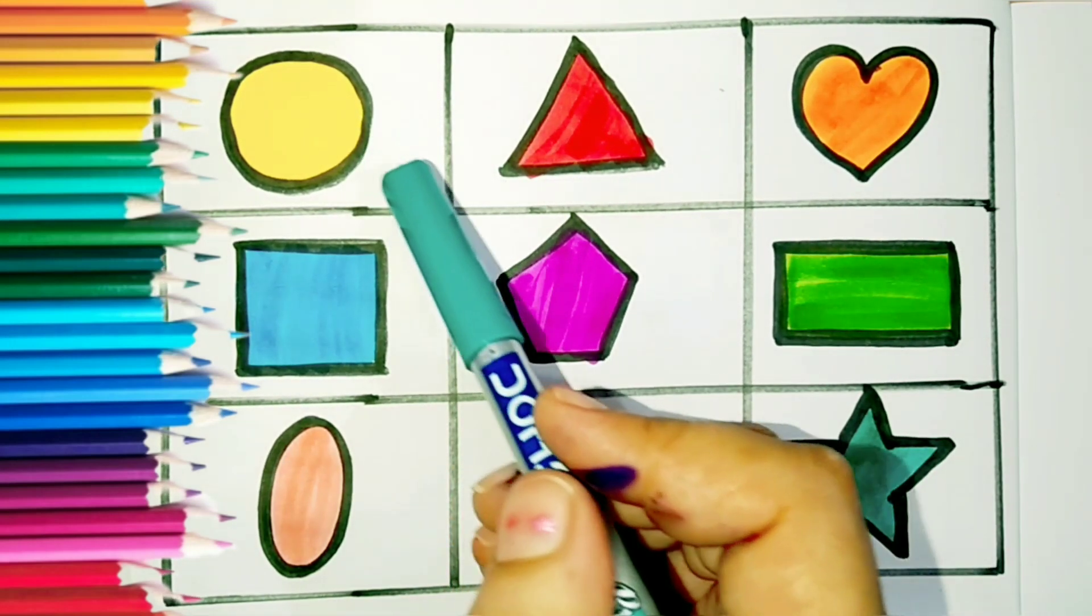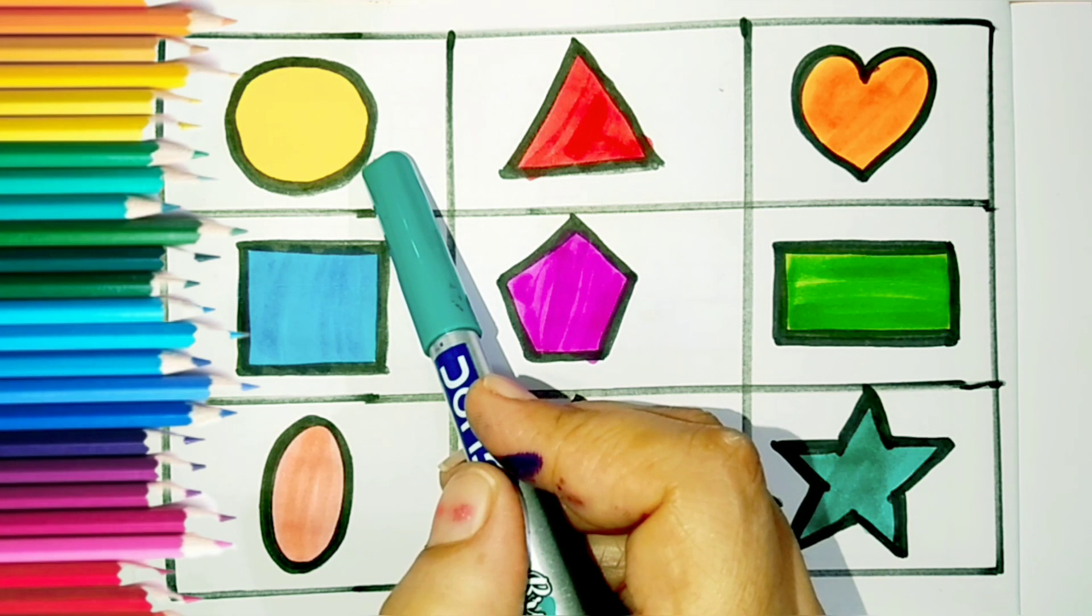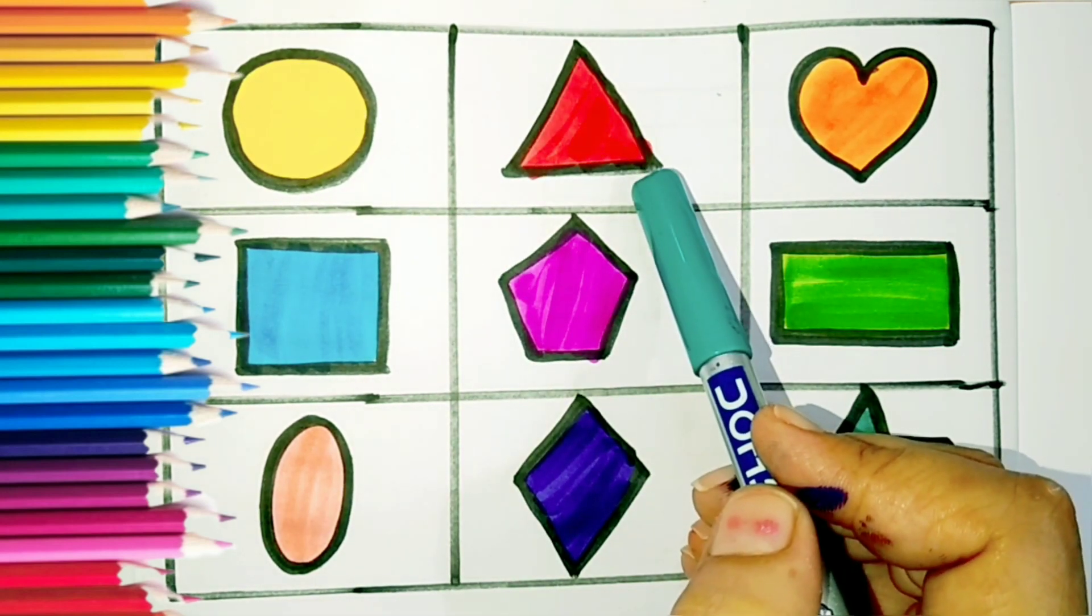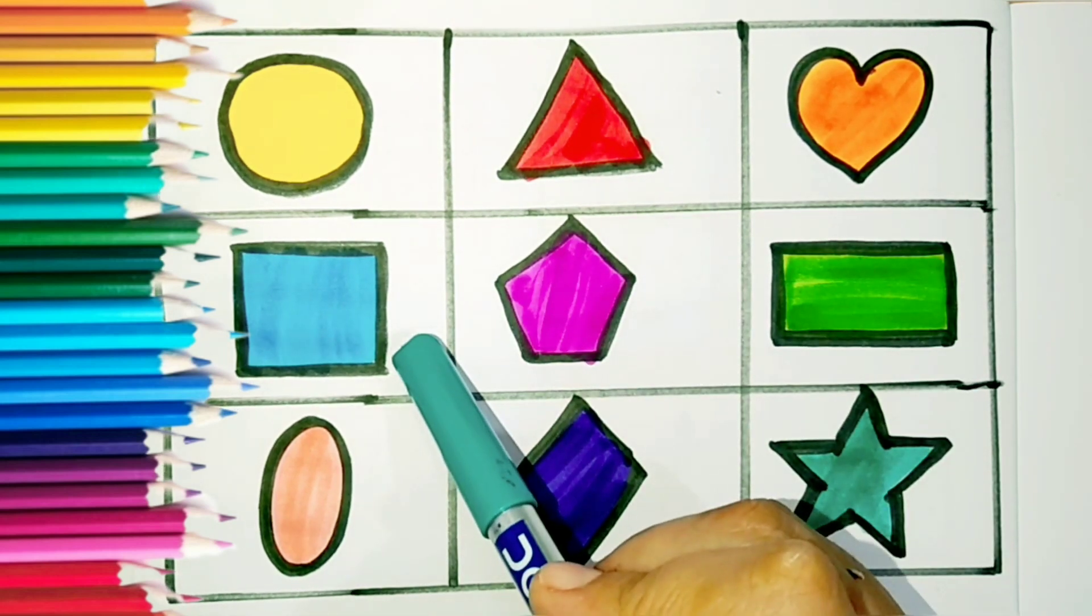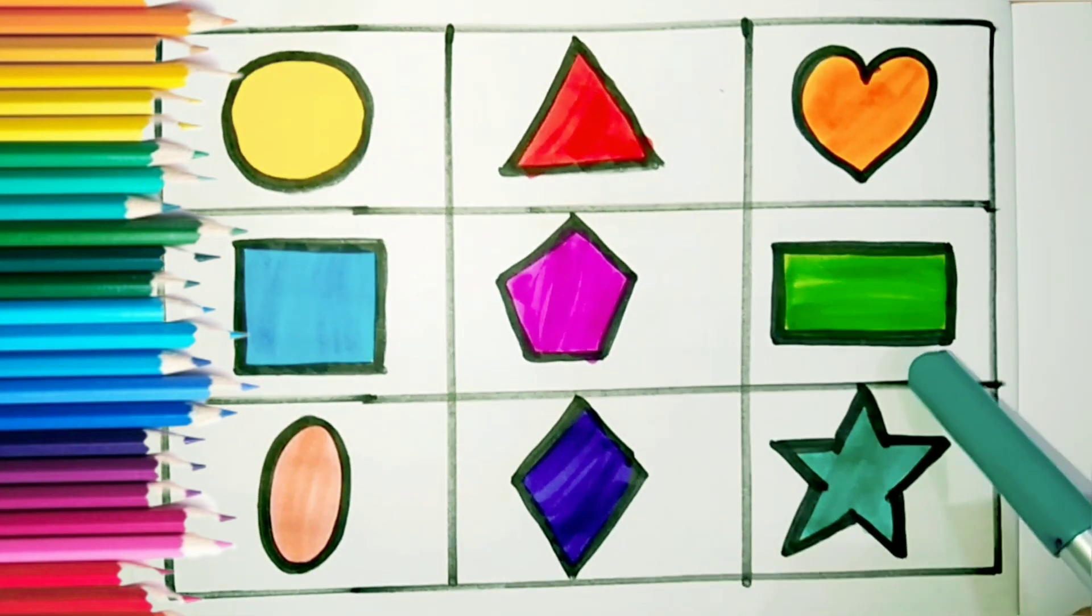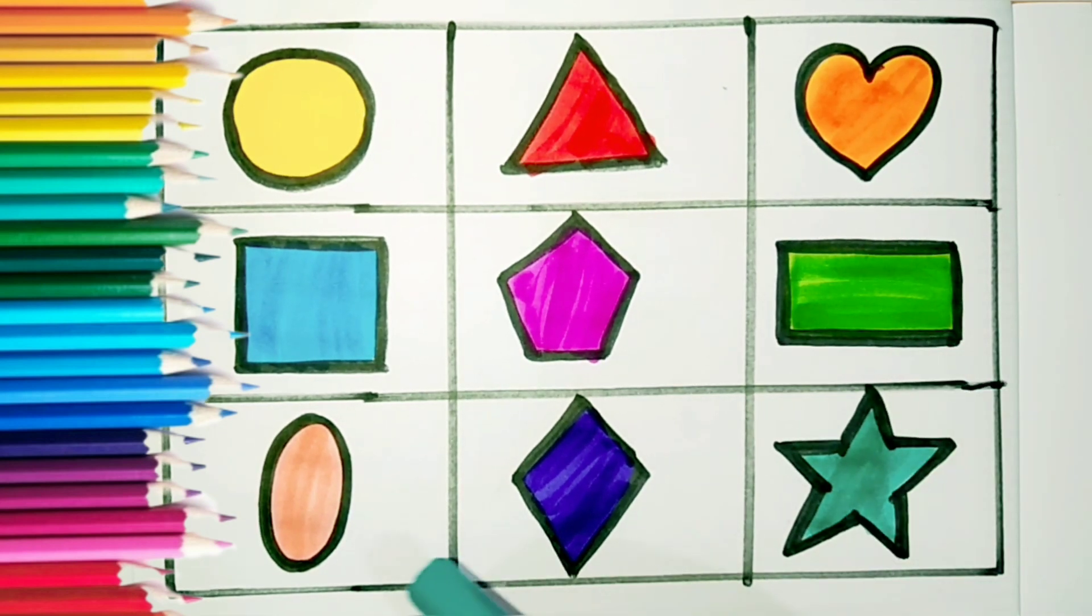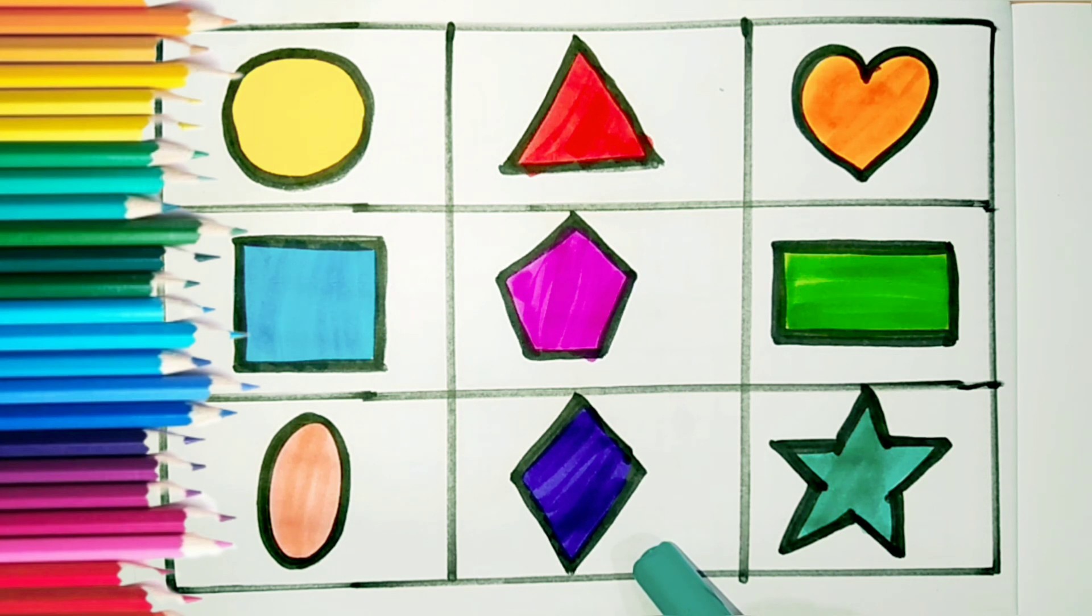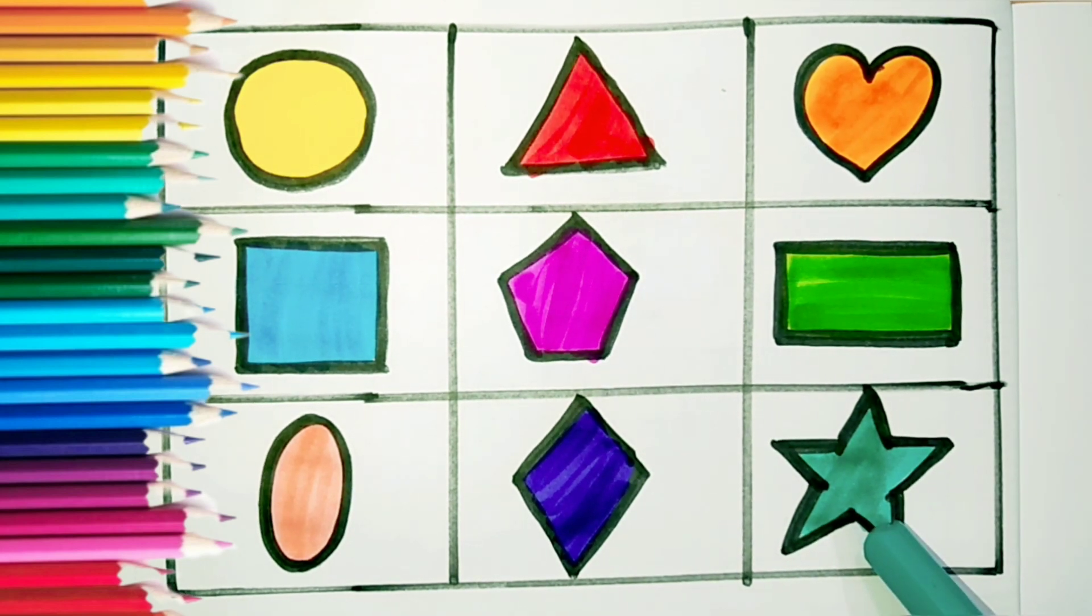Now let's learn with me. Square, circle, triangle, heart, square, rectangle, oval, diamond, star.